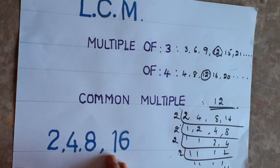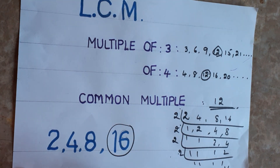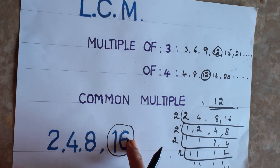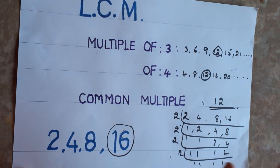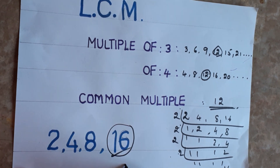In our shortcut method, the numbers are 2, 4, 8, and 16. Find the greatest number — that is 16. Then check: is 2 divisible by 16? Yes, 8 times. Is 4 divisible by 16? Yes, 4 times. Is 8 divisible by 16? Yes, 2 times. Since all other numbers divide into 16, the LCM is simply 16. You can do this within seconds.